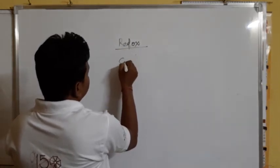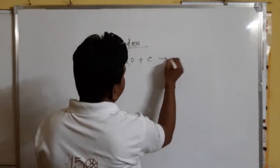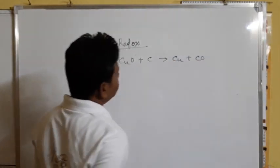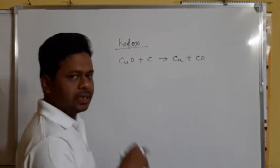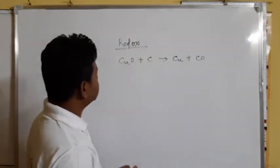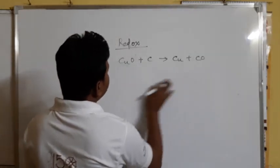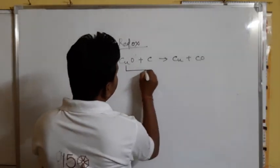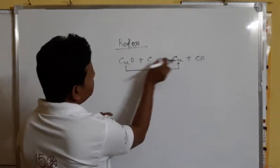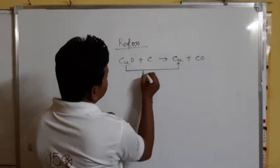The reaction we take is: CuO + C gives Cu + CO2. This is a redox reaction because CuO becomes Cu — oxygen is given out, so reduction takes place — while C combines with oxygen to form CO2, so oxidation takes place. Since both reduction and oxidation occur, it is called a redox reaction.